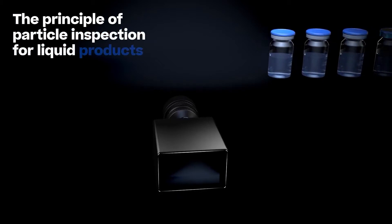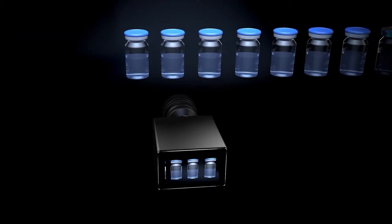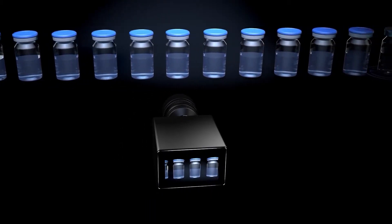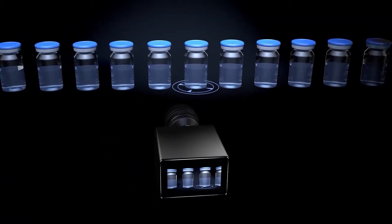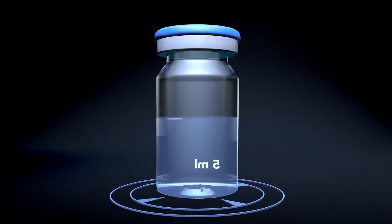The principle of particle inspection for liquid products: Conventional camera inspection by Seidenader Solutions identifies particles in liquids by monitoring their changes in position. Stationary markings, scratches or contamination on the outside of the container can therefore be clearly differentiated from particles inside the container.